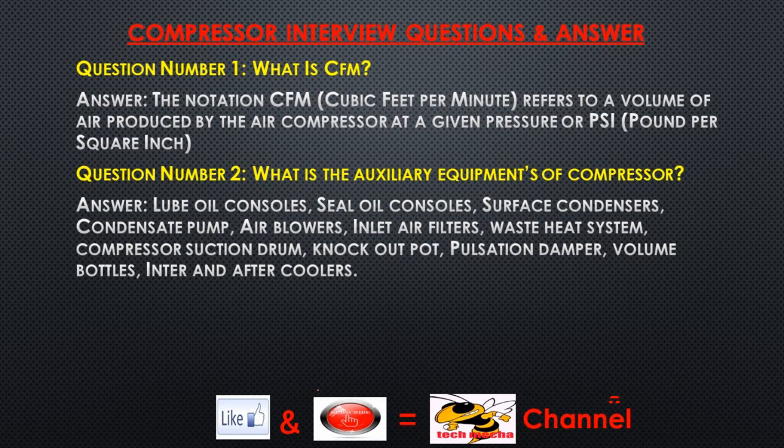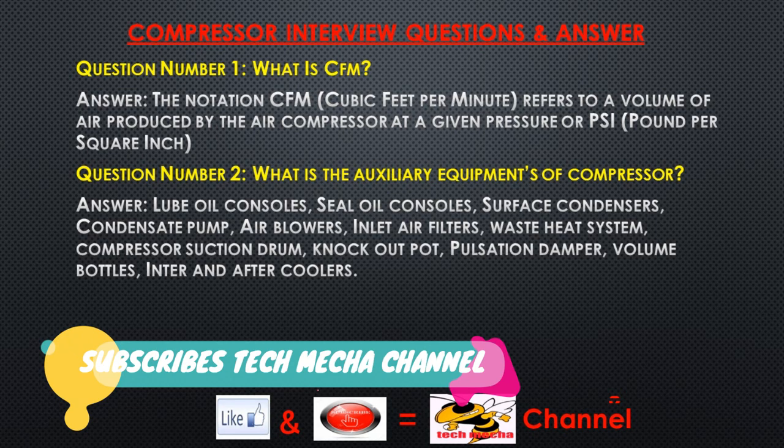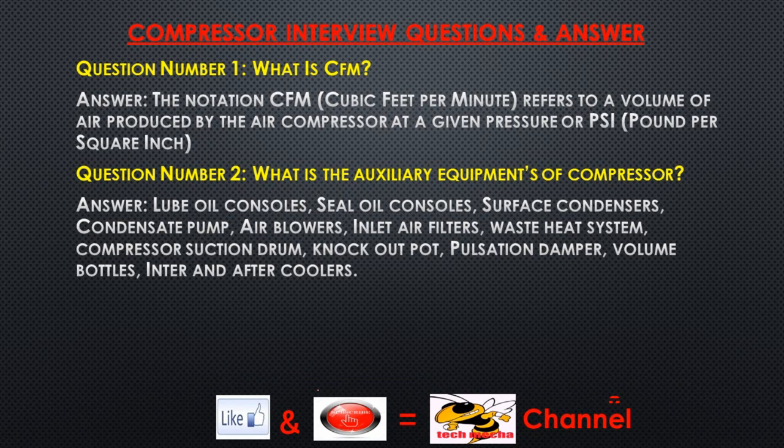Question number 2: What is the auxiliary equipment of a compressor? Answer: Lube oil consoles, seal oil consoles, surface condensers, condensate pump, air blowers, inlet air filters, waste heat system, compressor suction drum, knocked out pot, pulsation damper, volume bottles, inter and after coolers.